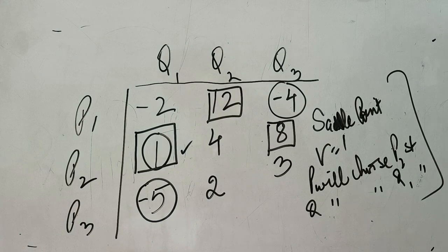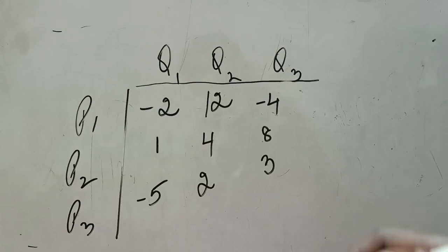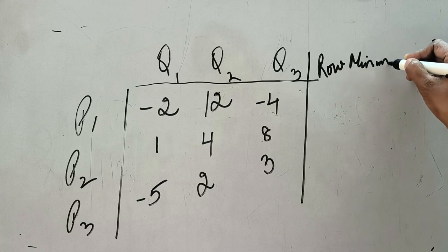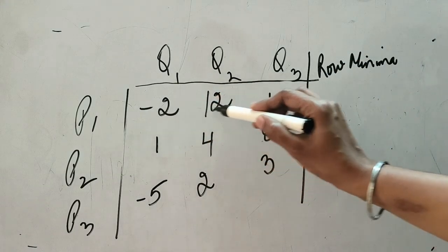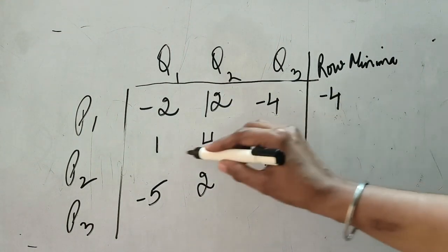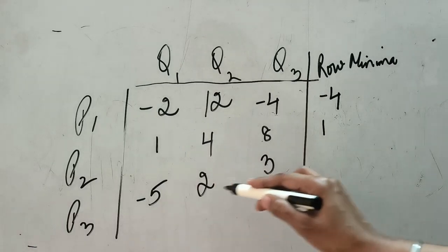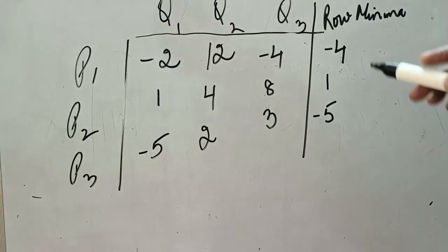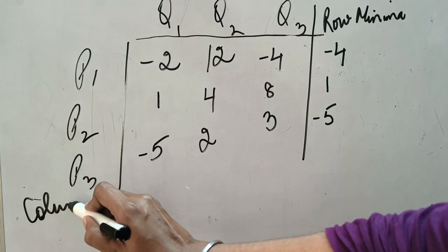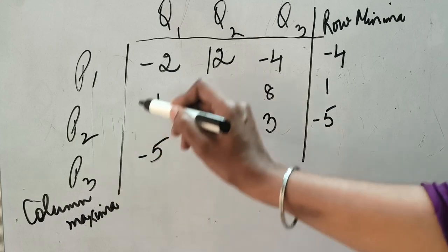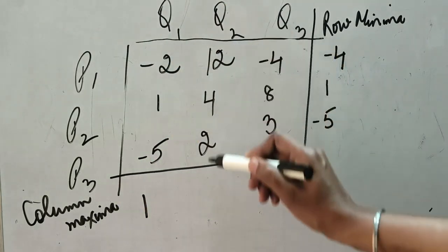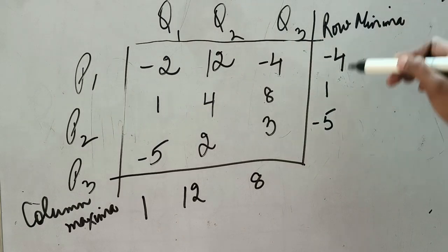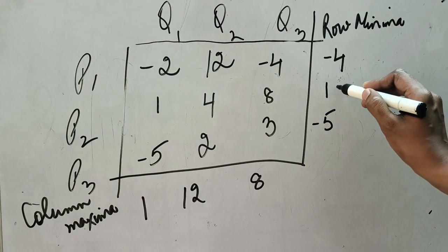The answer can also be presented in another way. We add a column called 'Row Minima' and write the minimum value from each row: −4 from the first row, 1 from the second row, and −5 from the third row. Then we add a row called 'Column Maxima' and write the maximum from each column: 1, 12, and 8.